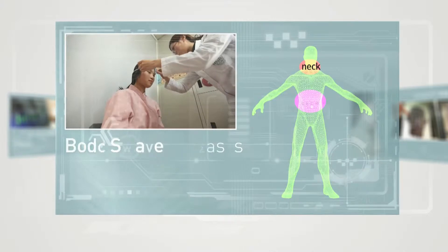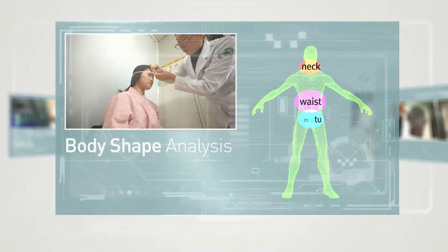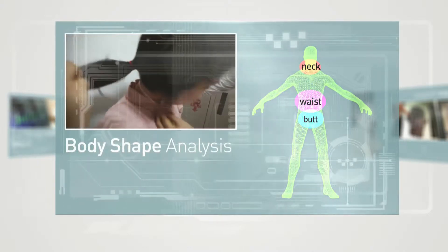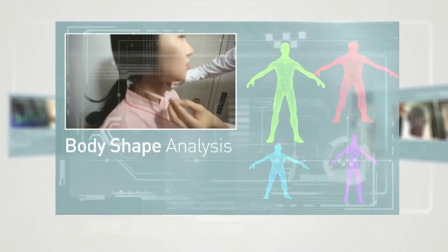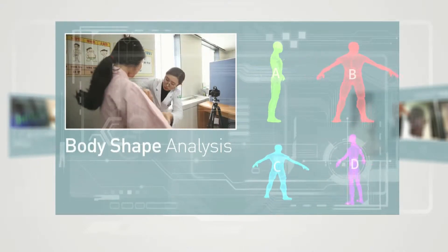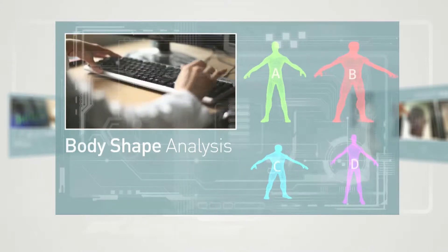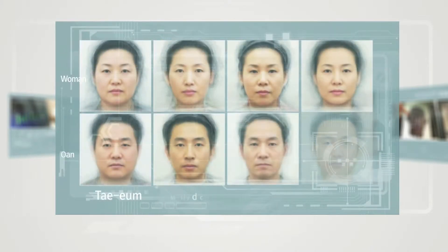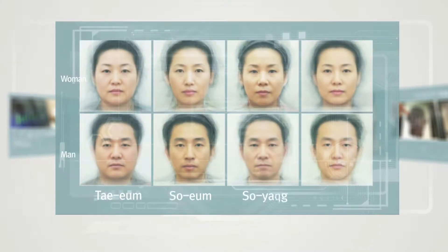And by integrating body sizes including neck, waist, and hip circumferences, and standard scores by age, the standard constitution diagnosis can be put to practical use.